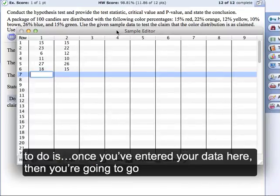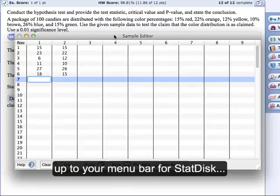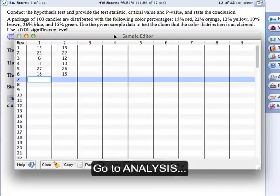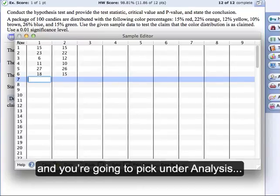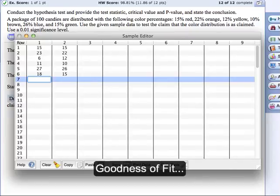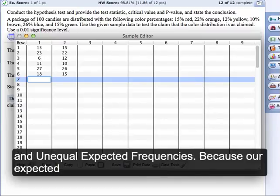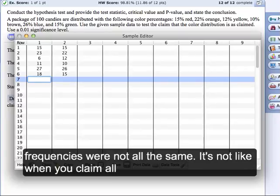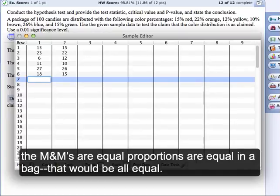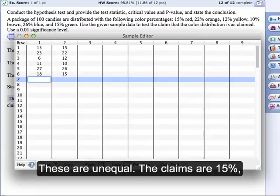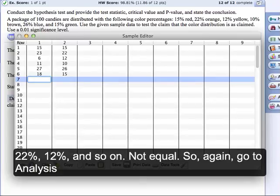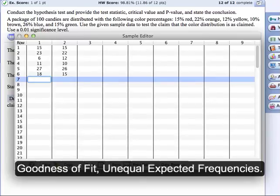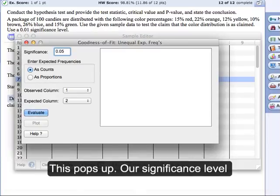Now the next thing to do is once you've entered your data here, then you're going to go up to, in your menu bar for StatDisk, go to Analysis. And you're going to pick, under Analysis, Goodness of Fit, and Unequal Expected Frequencies, because our expected frequencies in the second column are not all the same. It's not like when you claim that all the M&Ms are equal proportions in a bag. That would be all equal expected. But these are unequal. The claims are 15%, 22%, 12%, and so on. They're not equal. So again, go to Analysis, Goodness of Fit, Unequal Expected Frequencies, and this pops up.